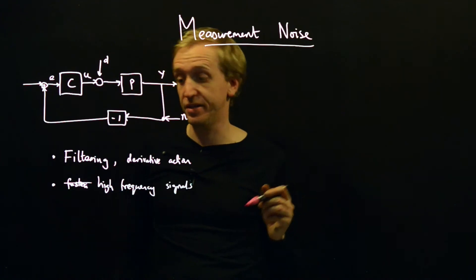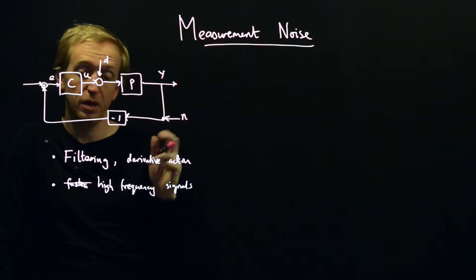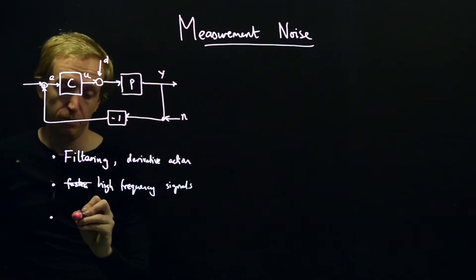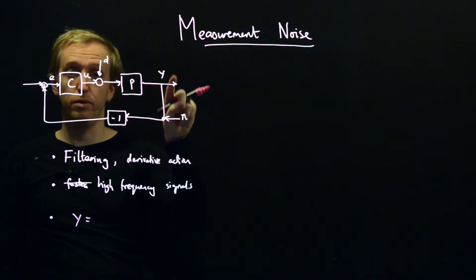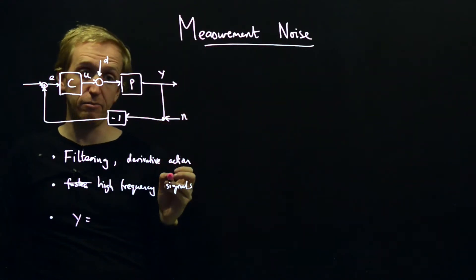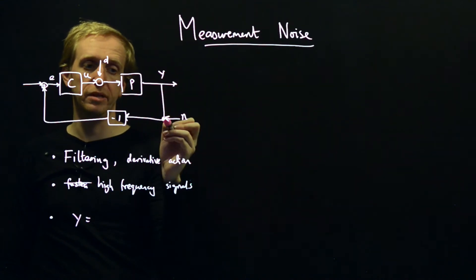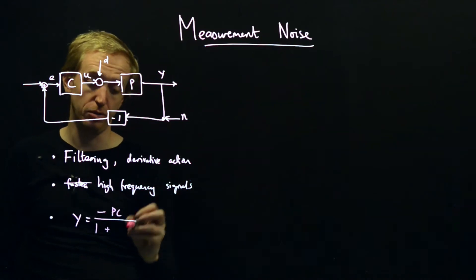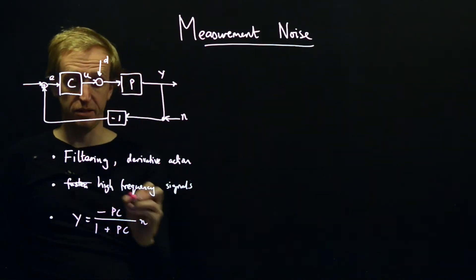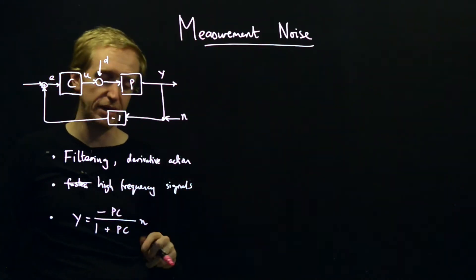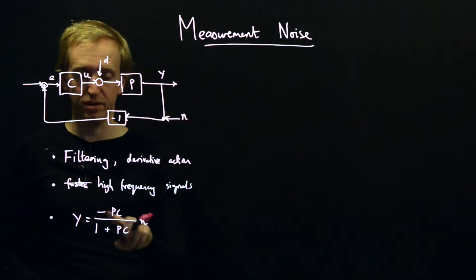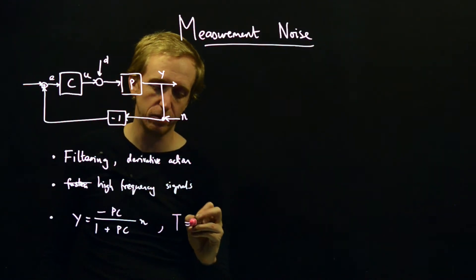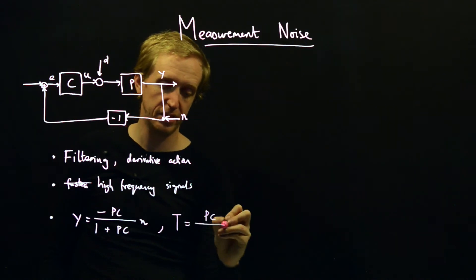How can we understand the effect of noise on the various signals in our loop? Just like last time, we start by looking at the transfer function from N to the various signals in the loop. Looking at the effect of noise on the behavior of our process, we take the product of everything between the input signal and the output signal — in this case, minus PC — and divide by one plus the return ratio, which is one plus PC. This is a very important transfer function, typically called T, or our complementary sensitivity function: PC over one plus PC.